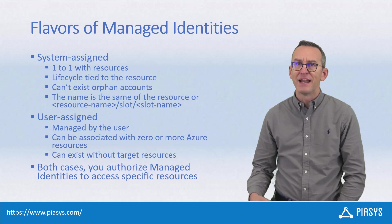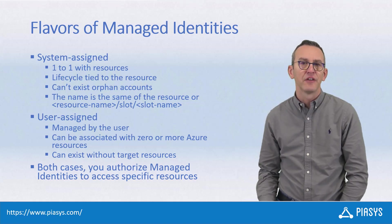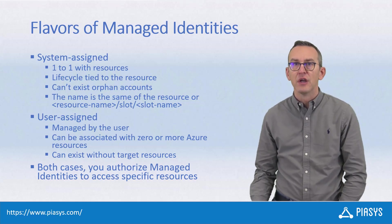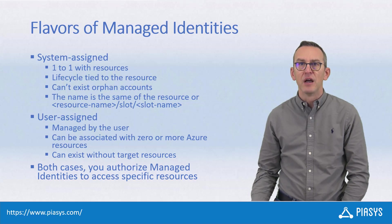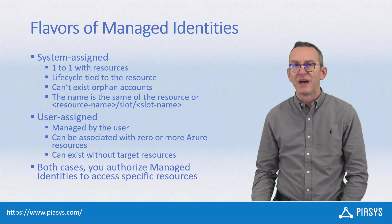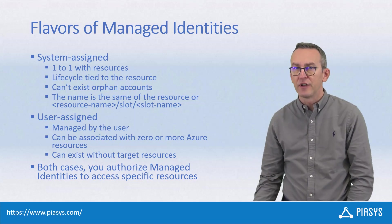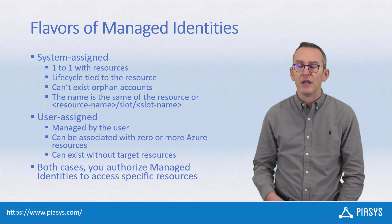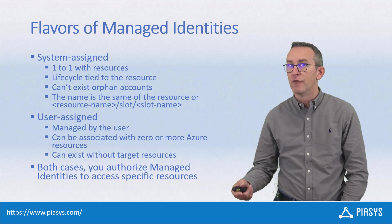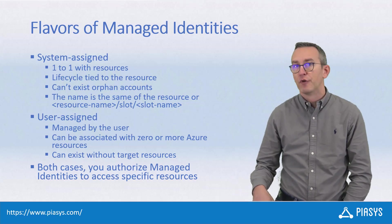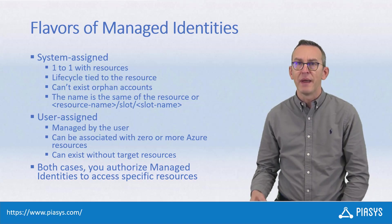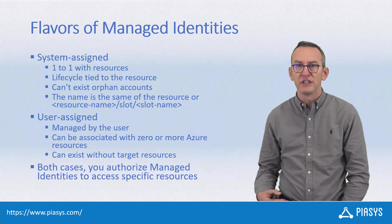When you have a managed identity of type system-assigned associated to a resource like, for example, a web application or an Azure function with multiple deployment slots, the name of the managed identity would be based on the name of the resource followed by slash slot slash the name of the slot, meaning that you will have multiple managed identities for each and every deployment slot of your service. For regular services without deployment slots, you will simply have the name of the managed identity which will map to the name of the resource it is used to protect.